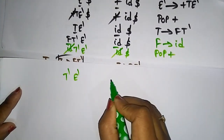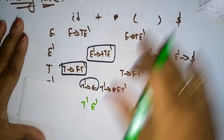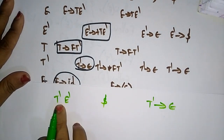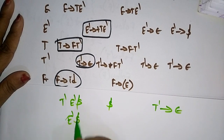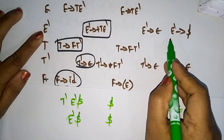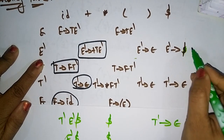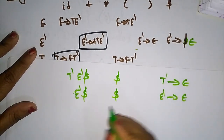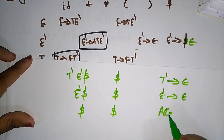Remaining stack is T-dash E-dash dollar. Check T-dash and dollar: T-dash → epsilon, so replace with empty string and remove it. Stack becomes E-dash dollar. Check E-dash and dollar: E-dash → epsilon, so substitute empty string and remove it. Stack becomes dollar. Both stack and input are dollar — the string is accepted.